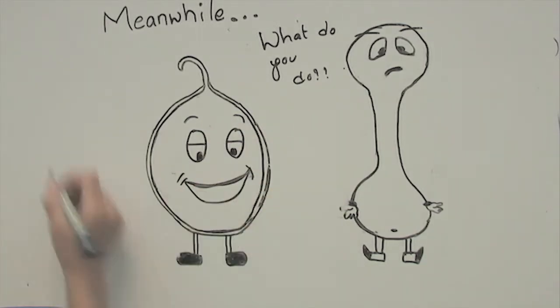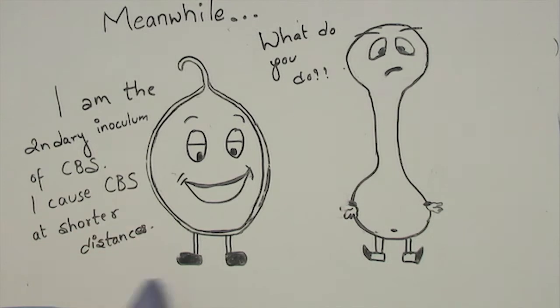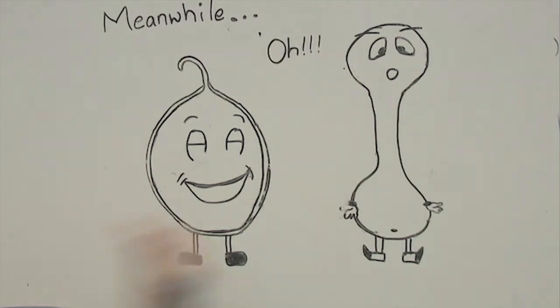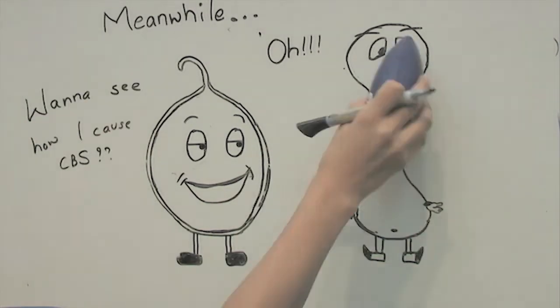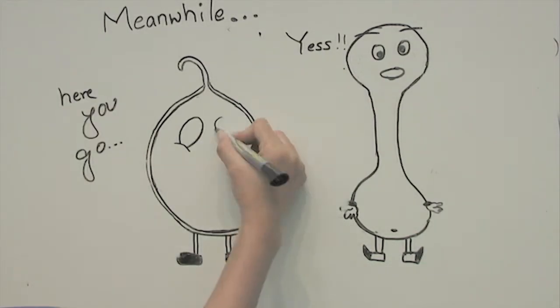And Conidia is like, I am the secondary inoculum of CBS. I cause CBS at shorter distances. I want to see how I cause citrus black spot. And the spermatia is all excited and says, yes, I want to see. And here we go.